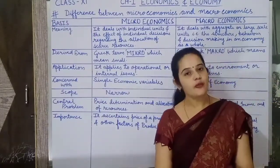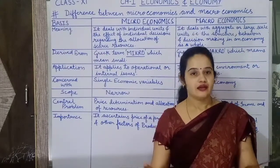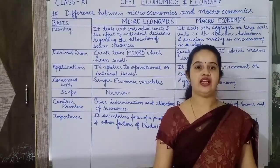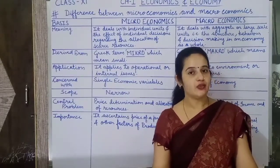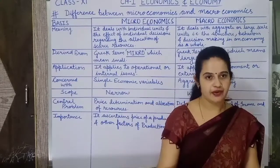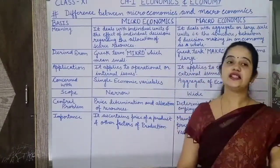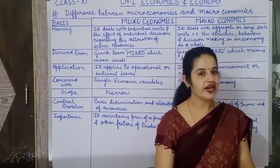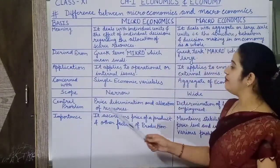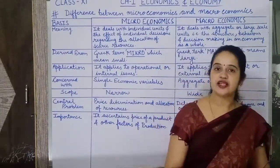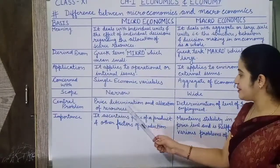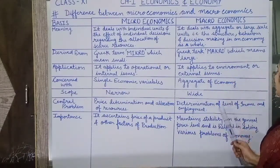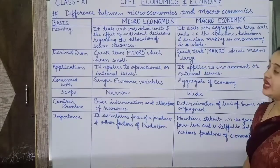Macroeconomics scope is wider because microeconomics studies problems at the individual level, such as how the price of a particular commodity affects its quantity demanded and quantity supplied. Macroeconomics deals with problems of the entire economy such as unemployment, monetary and fiscal policy, international trade, and so on. Regarding central problems, microeconomics helps in coping with price determination and allocation of resources, whereas macroeconomics helps in determining the level of income and employment.